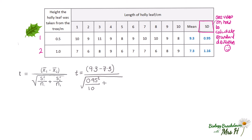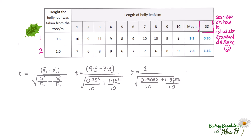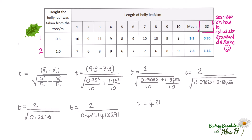Plus 1.16 squared divided by 10. Once you've calculated each part of the equation, you end up with 2 divided by 0.4741413291, which comes to 4.218151587. That is your t-value, and we can round that up to 4.22.